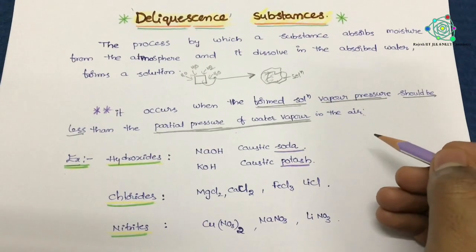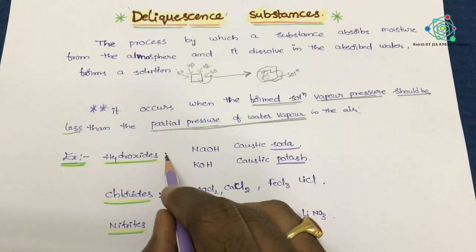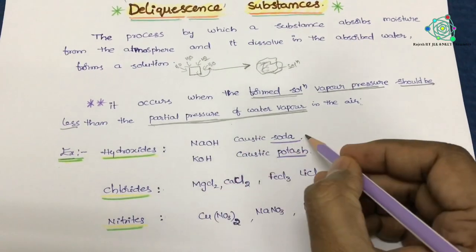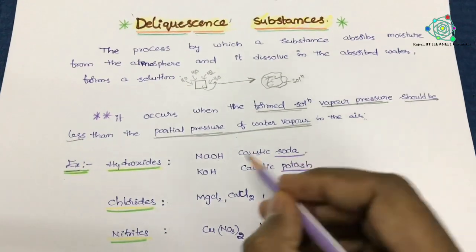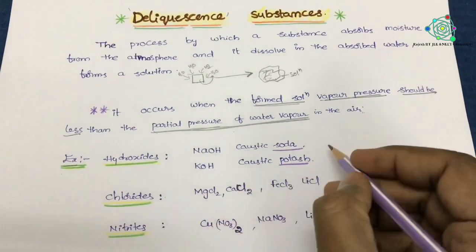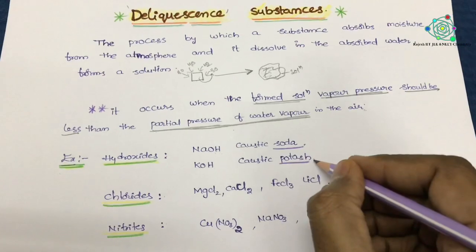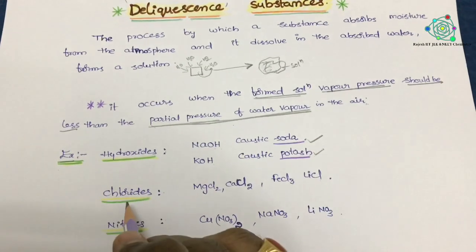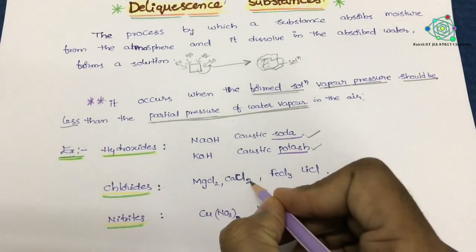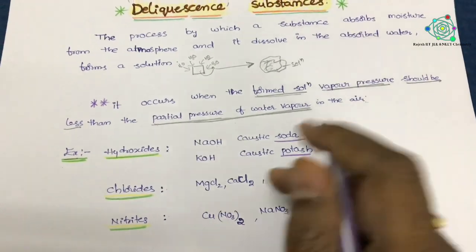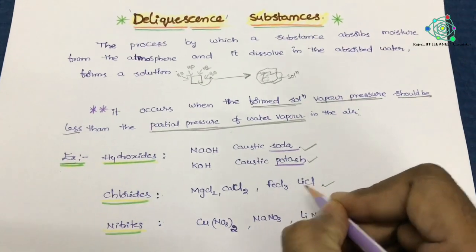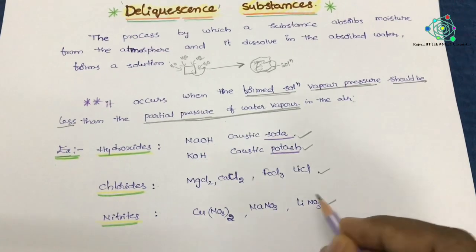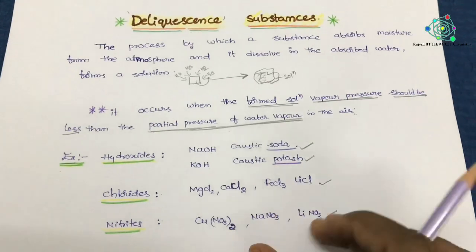Generally, deliquescence is shown by hydroxides, chlorides, and nitrates. Caustic soda — sodium hydroxide — shows deliquescence, and potassium hydroxide, which is caustic potash, also shows deliquescence. These two hydroxides majorly can show it. Coming to chlorides: magnesium chloride, calcium chloride, ferric chloride, and lithium chloride can show deliquescence. From the nitrates point of view: copper nitrate, sodium nitrate, and lithium nitrate can show deliquescence. So this is about today's concept.